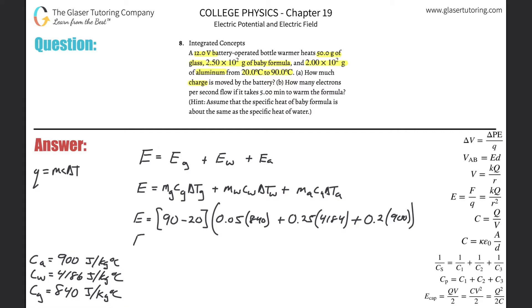All we now need to do is calculate the total amount of energy. So 90 minus 20 is 70. I'm going to take 70 and multiply it by each of these. So 0.05 times 840, plus 0.25 times 4184, plus 0.2 times 900. And I get a value of about 88,760 joules.